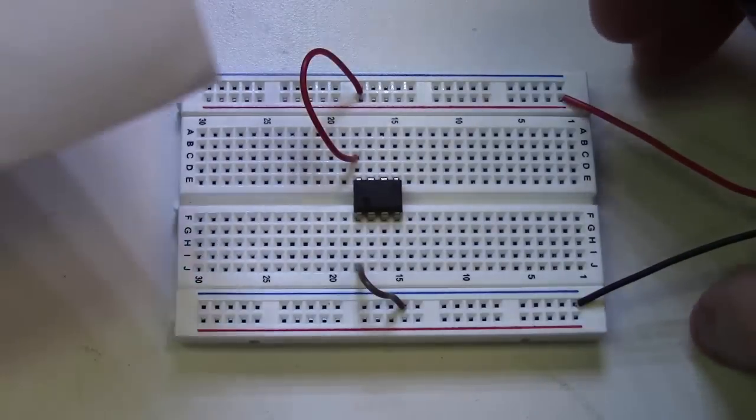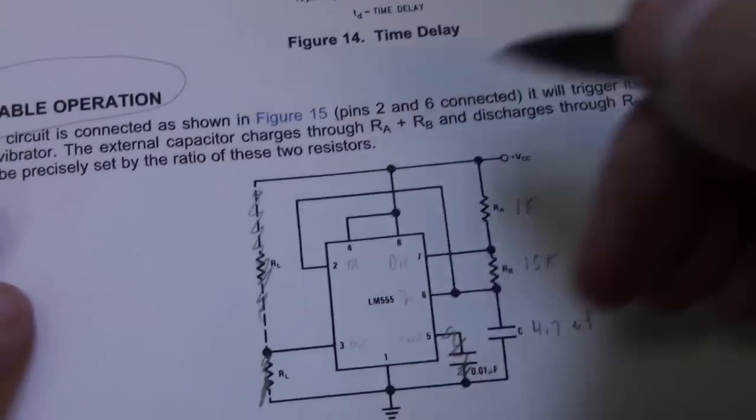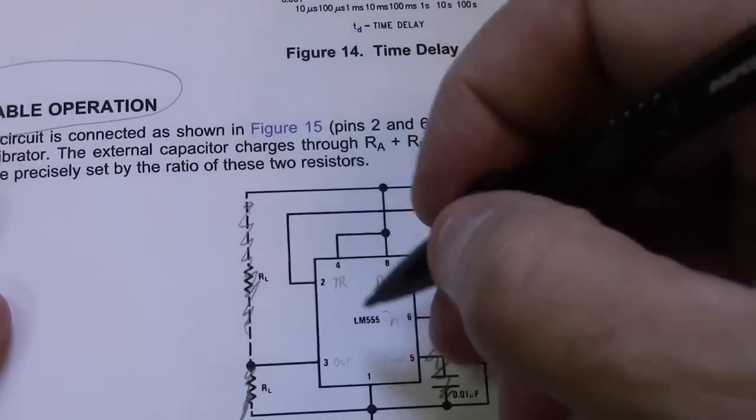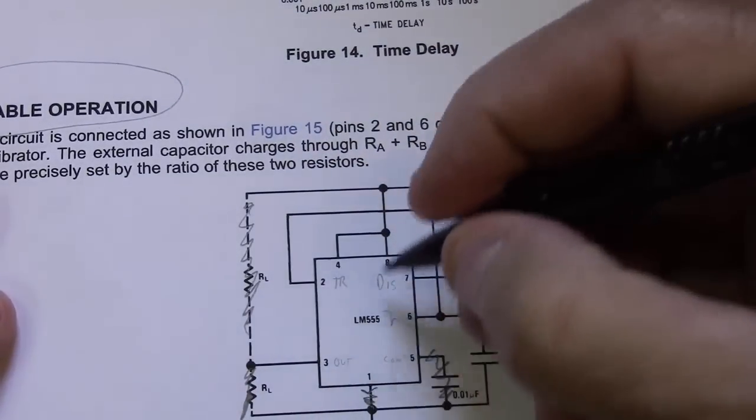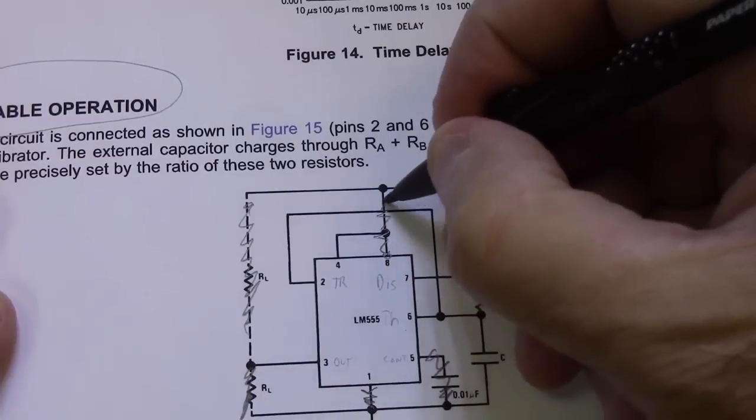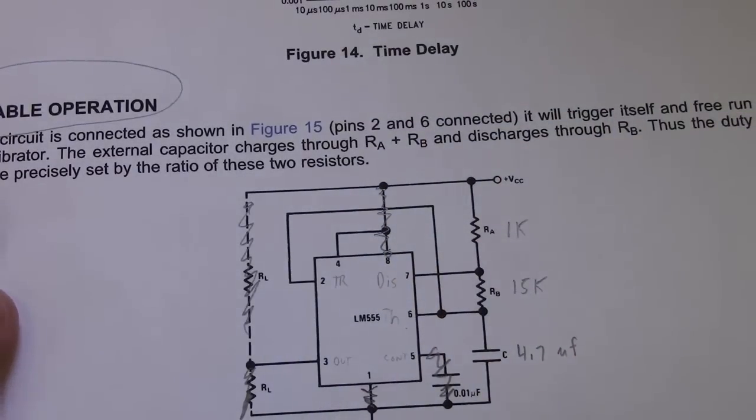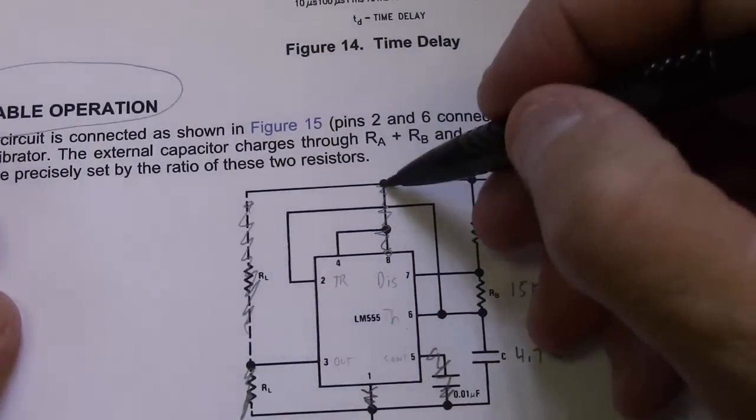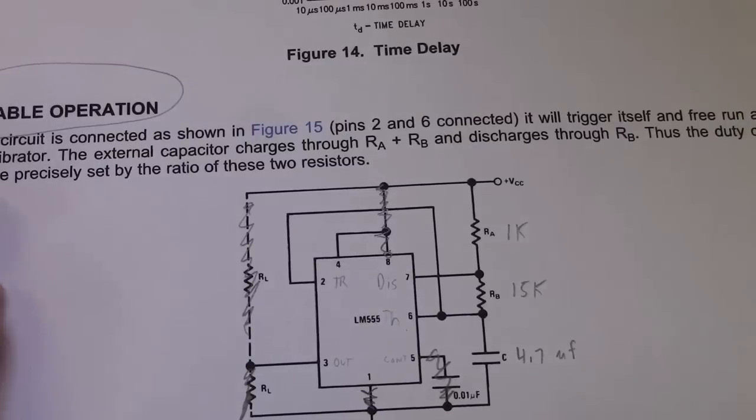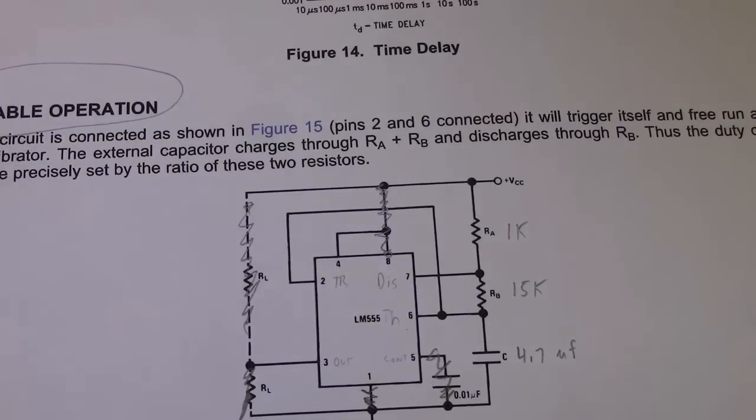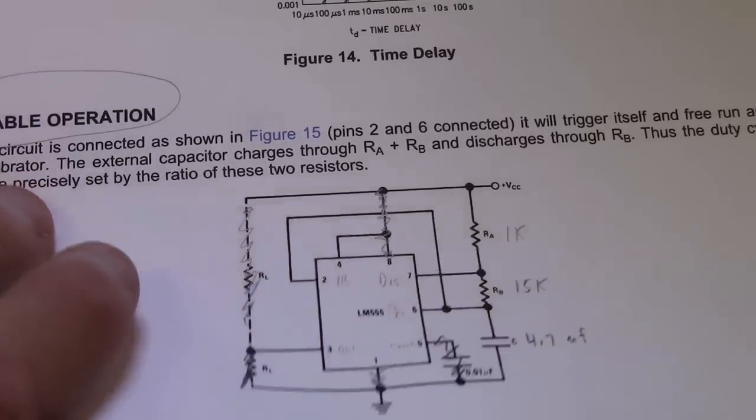So far what we've done is we have hooked pin one to ground and we have hooked pin eight to V plus. This is a great way to keep track of what you're doing - just cross it off as you go.